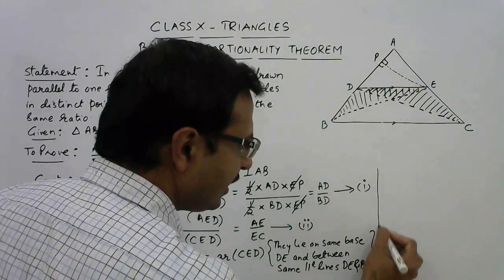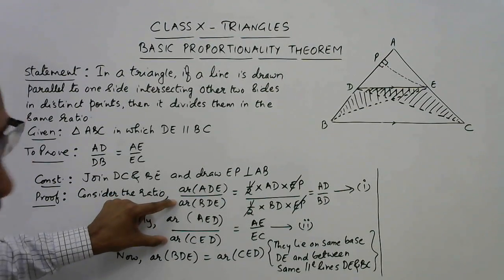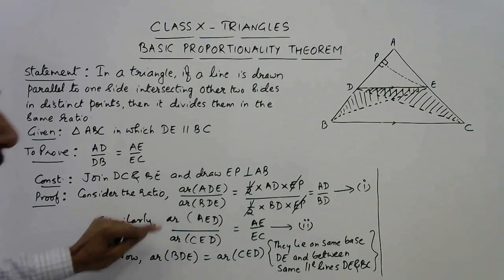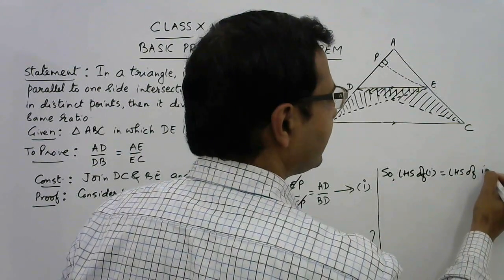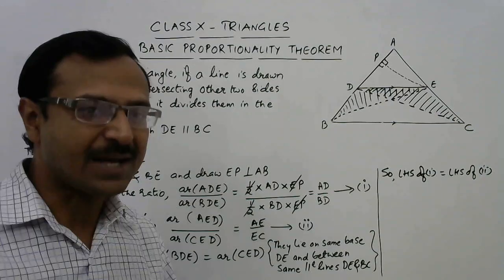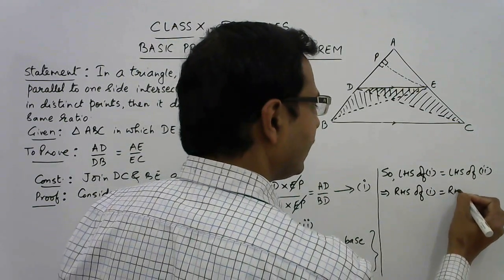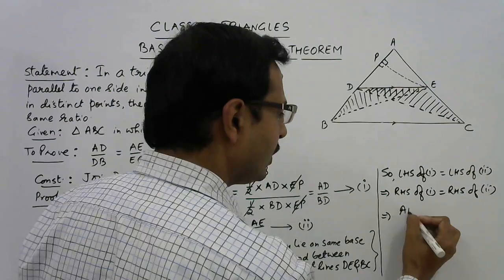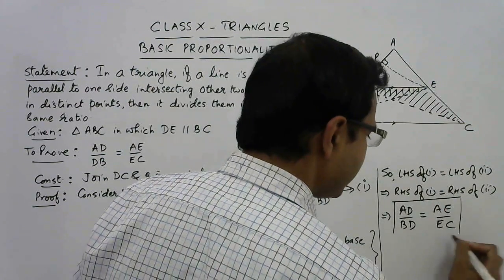After this, it is just theory — you have to write two steps and get to the answer. We have proved that the denominator of the first equation and the denominator of the second equation are equal. The numerator was already equal. So the LHS of the first equation equals the LHS of the second equation. And why did we do that? Because we wanted to prove that the RHS of the two equations are also equal. That implies the RHS of the first equation equals the RHS of the second equation, thereby giving us the desired result: AD upon BD equals AE upon EC. And this proves our Basic Proportionality Theorem.